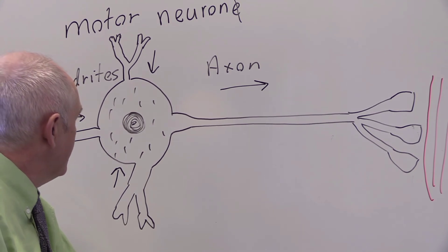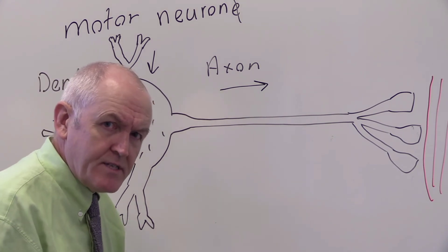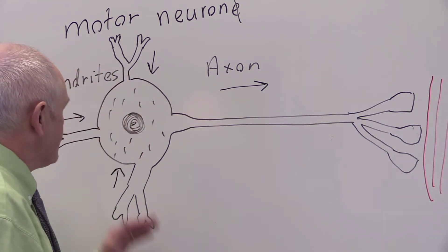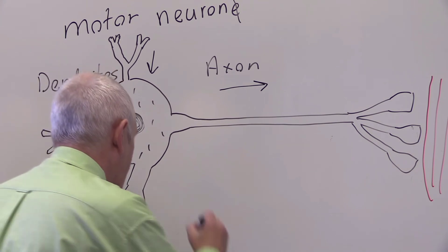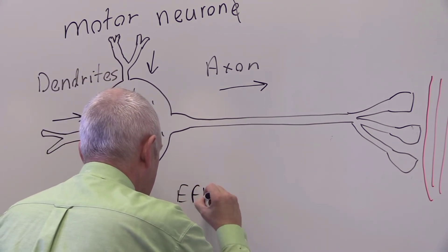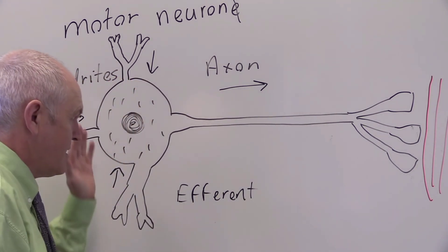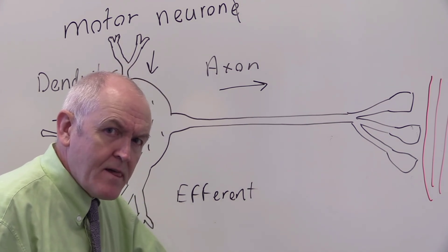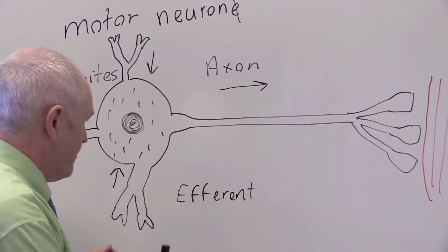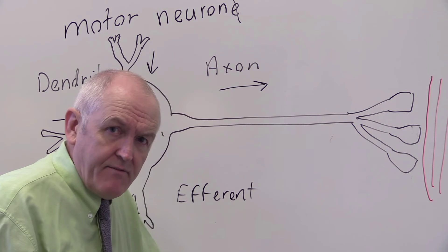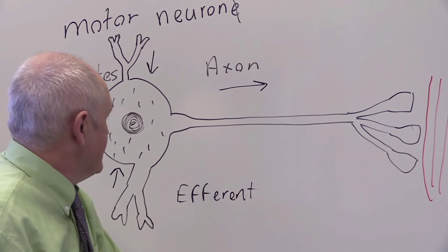The neuronal information carried as nerve impulses is being transmitted away from the central nervous system towards the periphery — so these are efferent fibers; this is an efferent system carrying information out. An afferent neuron carries information in towards the central nervous system, but motor neurons are efferent, carrying information out from the central nervous system to the periphery to facilitate movement.